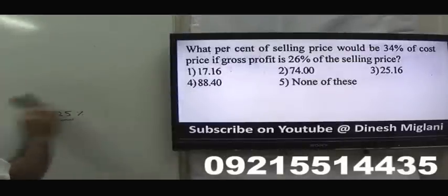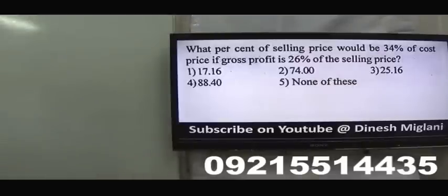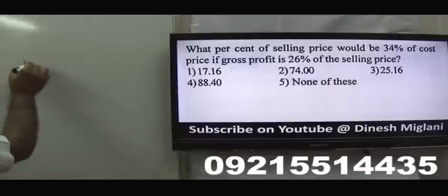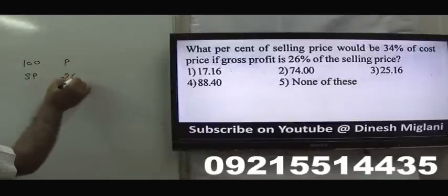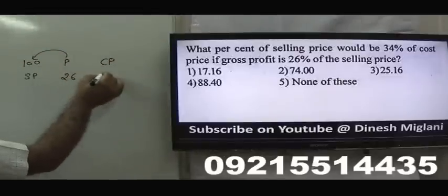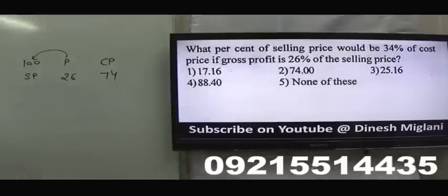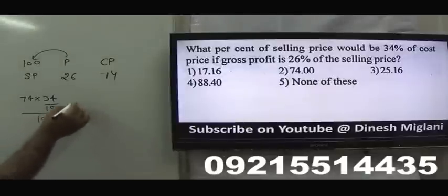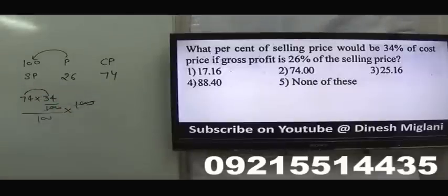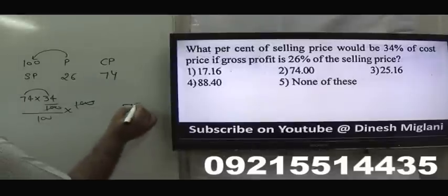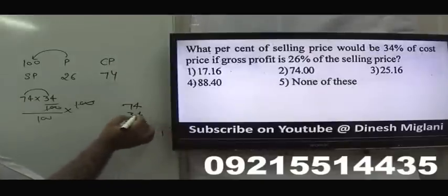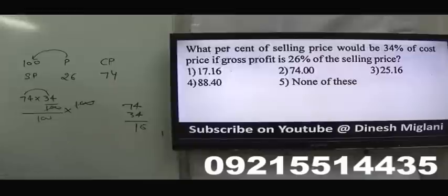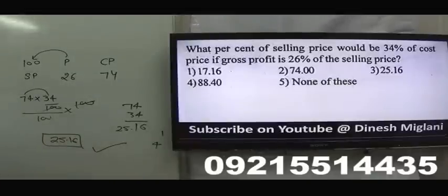Next question: What percentage of selling price would be 34% of cost price if gross profit is 26% of selling price? So cost is 100 − 26 = 74. 34% of cost price divided by selling price = 74 × 34 / 100. Multiply 74 by 34: that gives 2516, so the answer is 25.16%. Third is my answer.